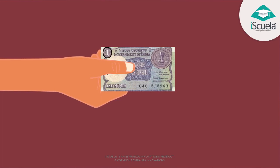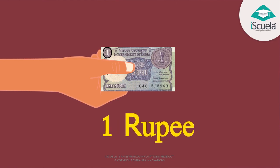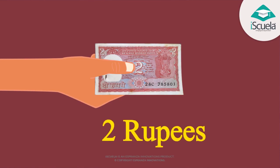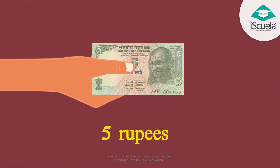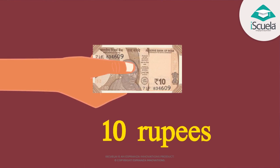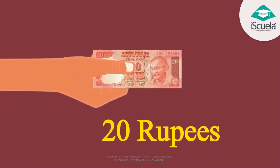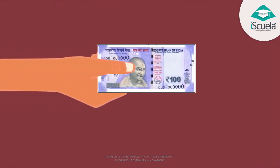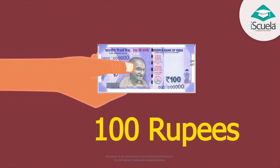Look and tell what is written on this currency note. Brothers, it's 1. Manmeet, this is a 1 rupee note. Now you show me the currency note and I will tell you its value. It's a 2 rupee note. It's a 5 rupee note. It's a 10 rupee note. It's a 20 rupee note. It's a 50 rupee note. It's a 100 rupee note.